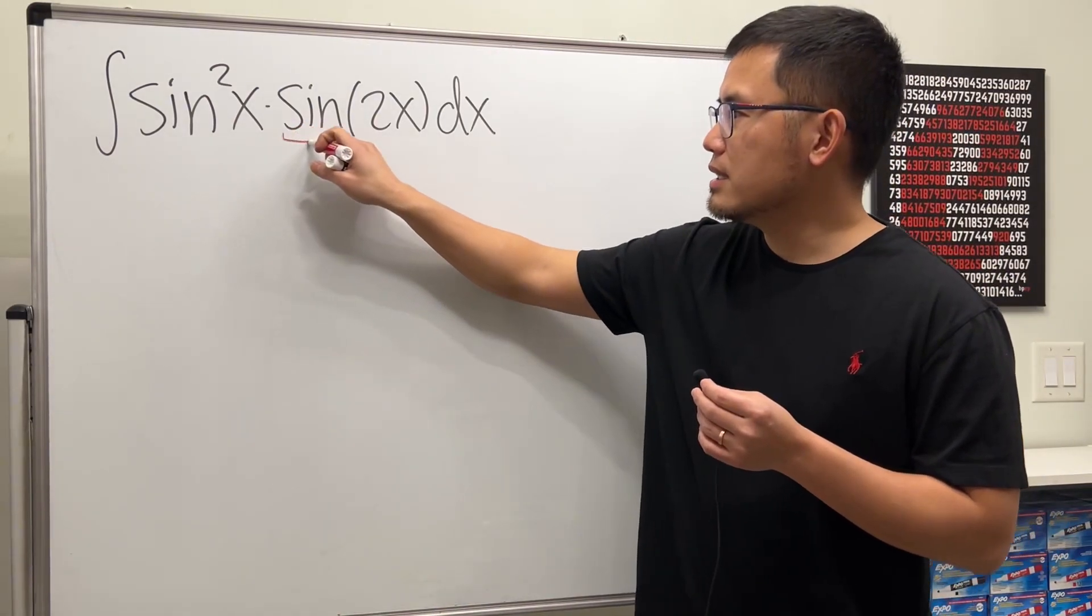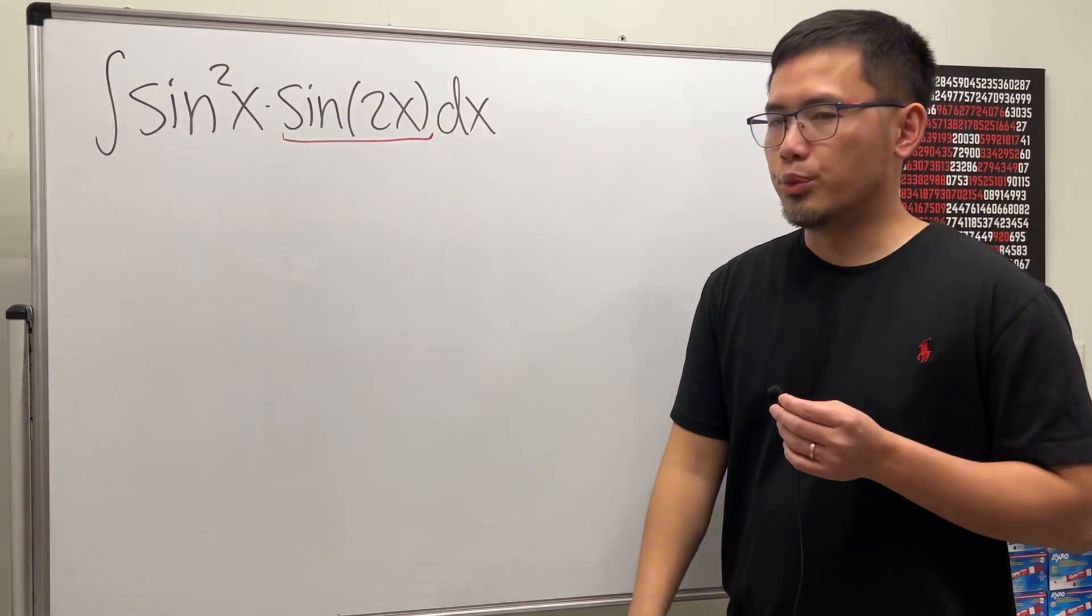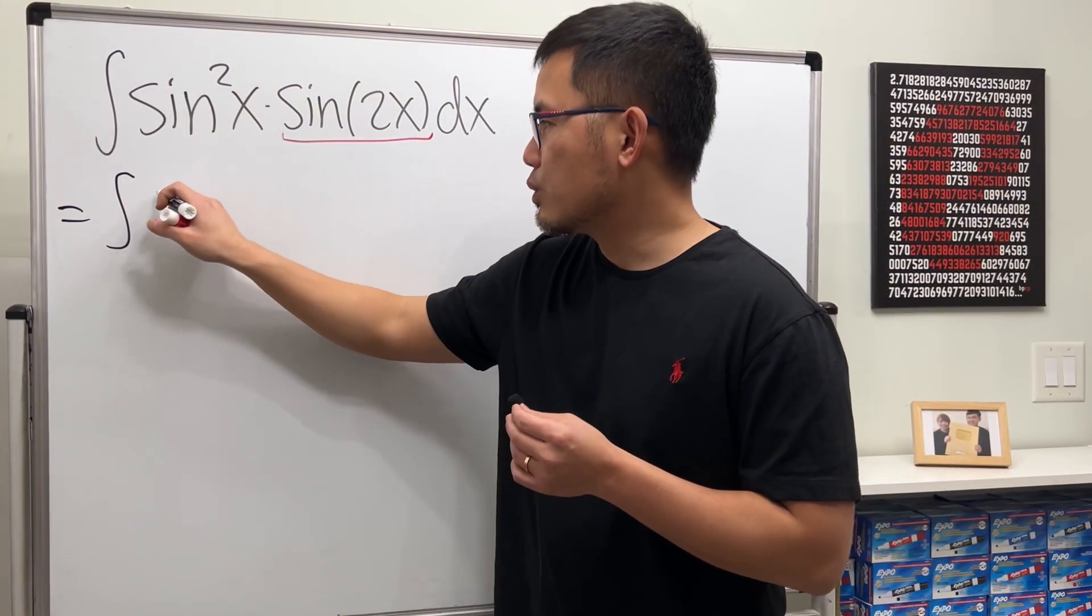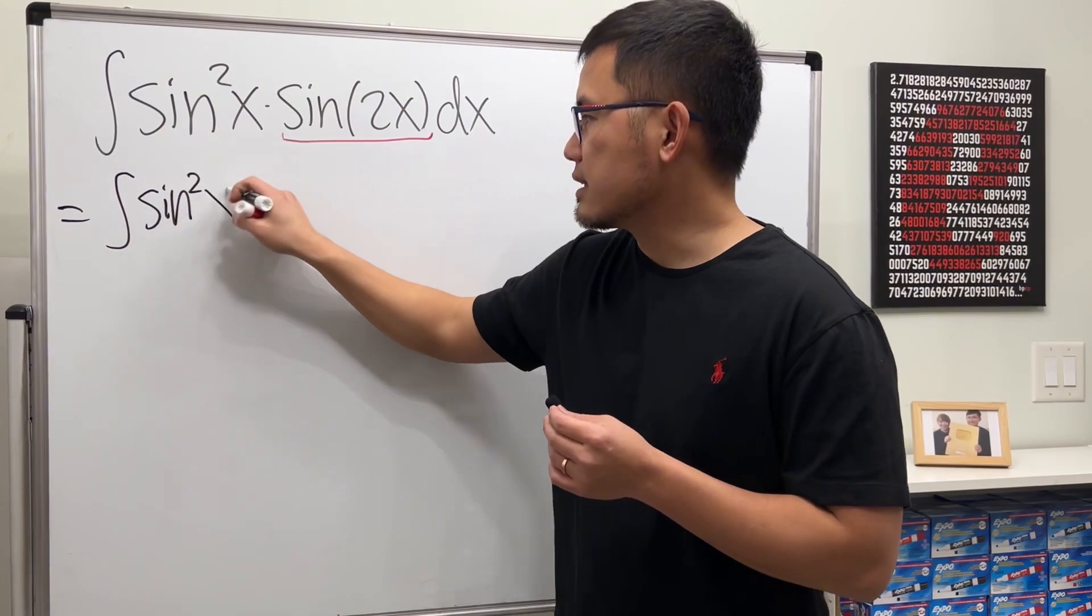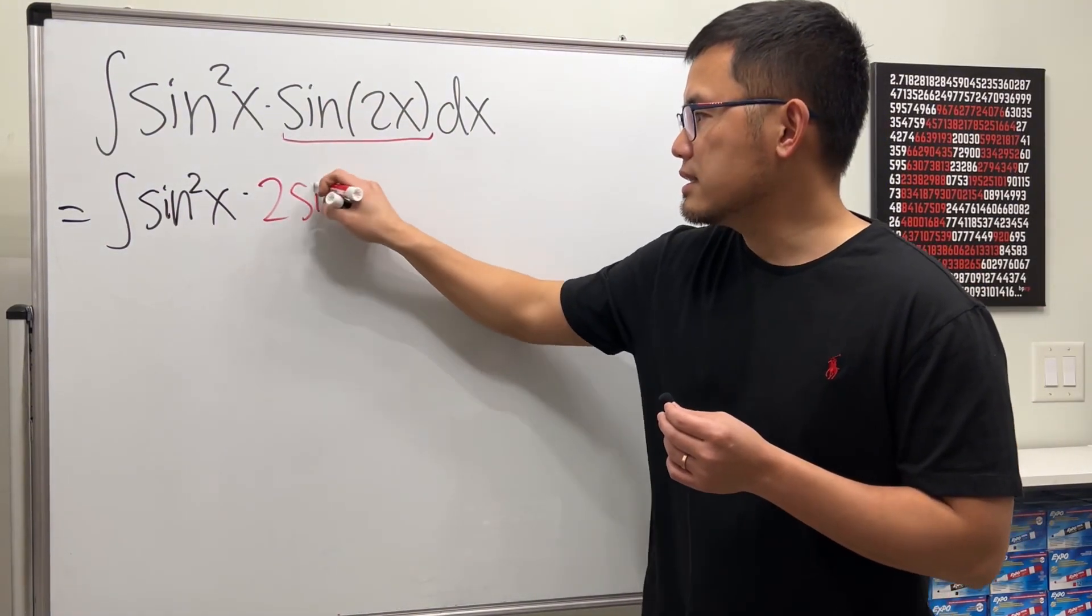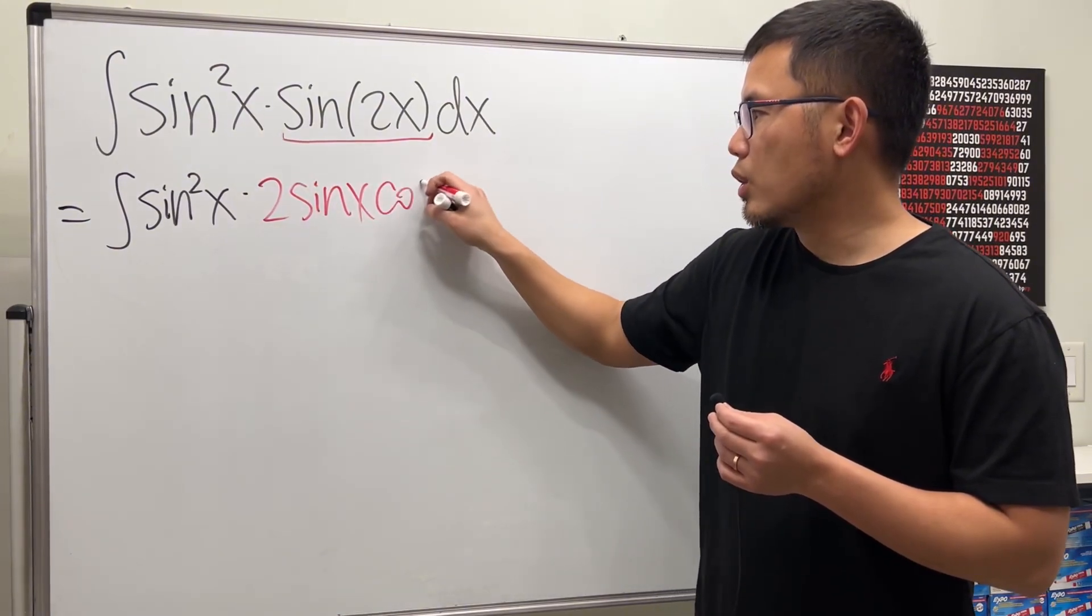So the first step is correct. You use the double angle identity to break this apart—that's perfect. So this is the integral of sine squared x times sine of 2x, which is 2 sine x times cosine x.